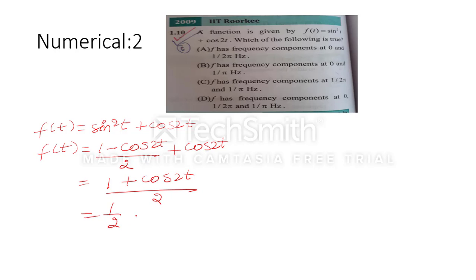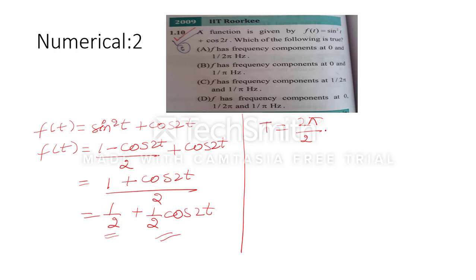You can see that one component is a DC signal: 1/2, which has zero frequency. For the cosine component, the time period T = 2π/ω where ω = 2, giving T = π. So frequency = 1/T = 1/π. Looking at the options — option B gives frequencies 0 and 1/π. So the correct option is B.